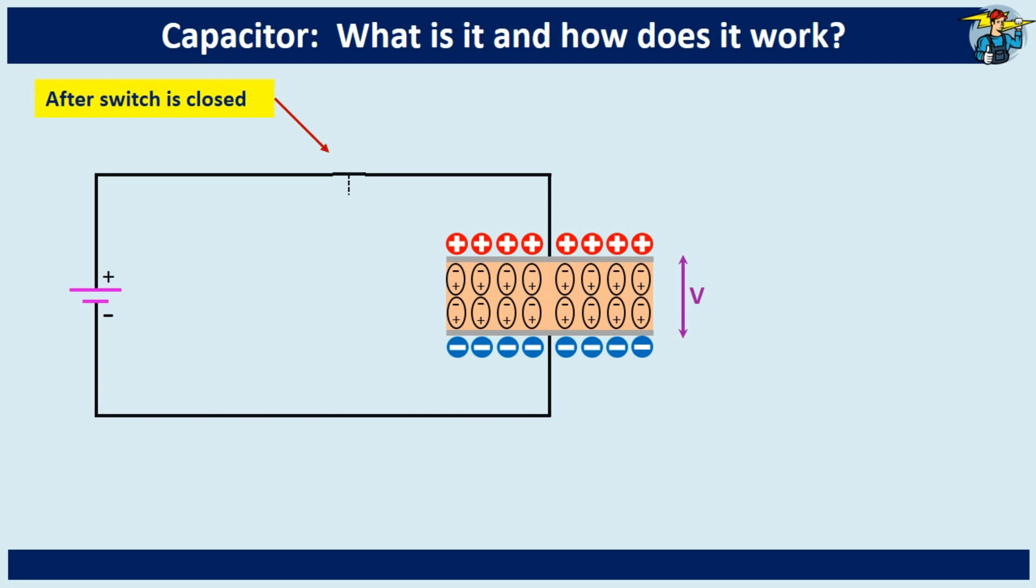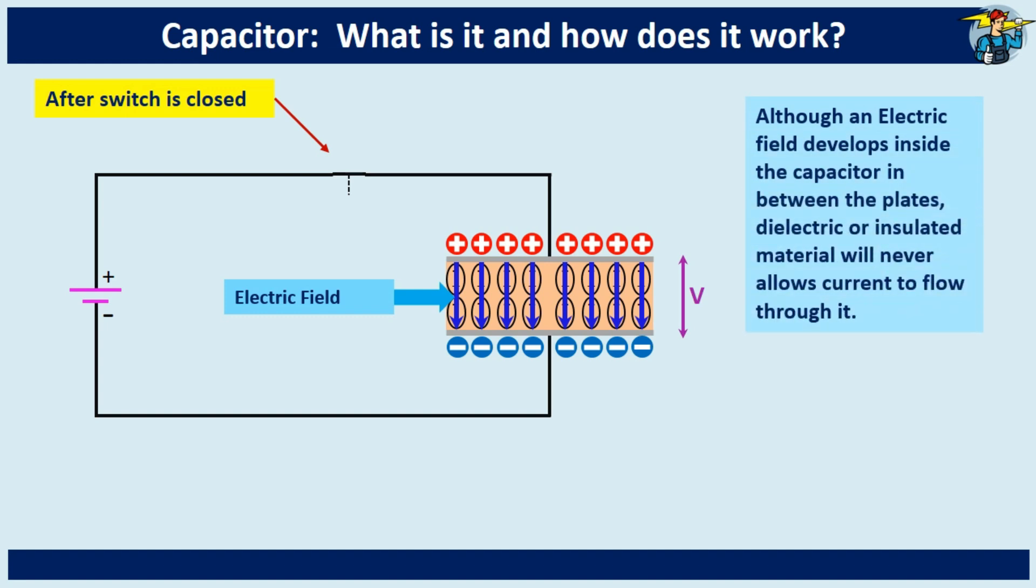Conductive plates on top and bottom hold equal and opposite charge between its surfaces now, thus developing an electric field within the dielectric material. Although an electric field develops within the dielectric, it will not allow current to flow through it as explained above, but it maintains a good charge between two plates.